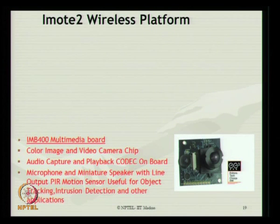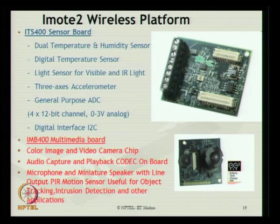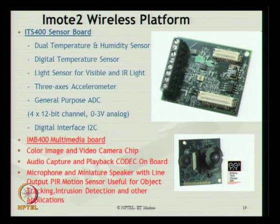The iMote2 wireless platform photograph is shown below. It contains an ITS 400 sensor board with a dual temperature/humidity sensor, a digital temperature sensor, three light sensors for visible and infrared light, a three-axis accelerometer built in, and a general-purpose ADC converter with a digital I2C interface. It can process color images and video through camera chipping, and audio capturing and playback facilities are also available on board.